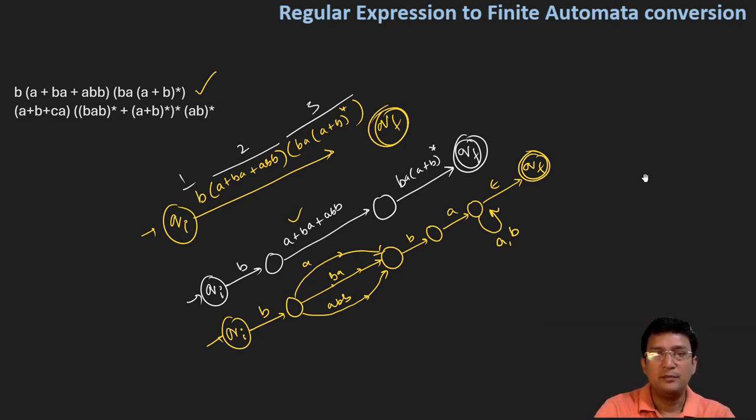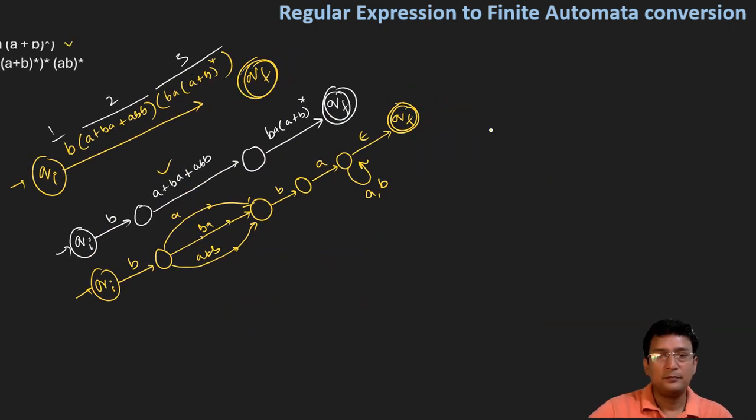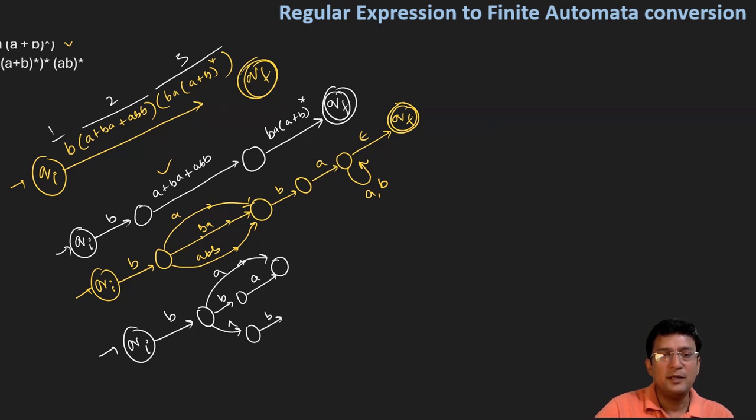Now, we further expand this to make the complete automata. The a transition will not be affected, but in ab we have to add one intermediate state in between. Next we have abb. So this means I have to reach the a state by adding intermediate states.